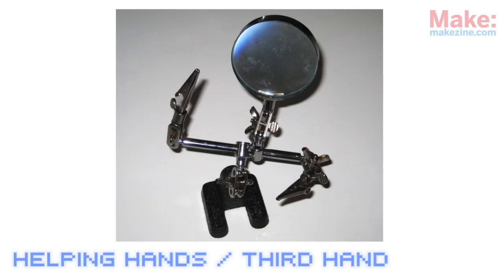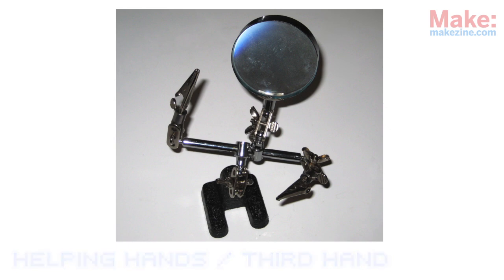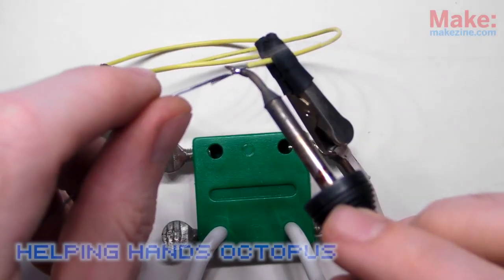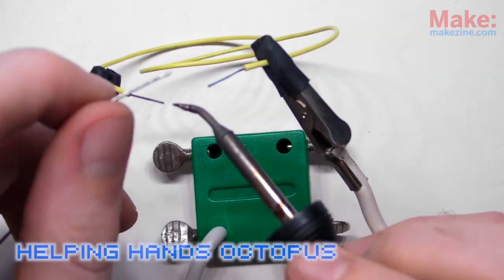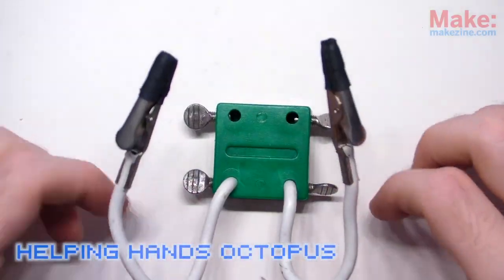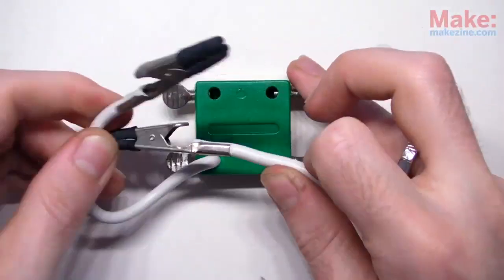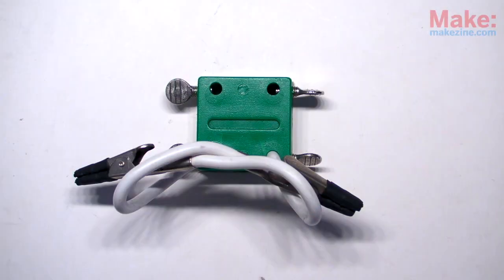Helping hands tools are okay for holding small PCBs, but I've found they're just too flimsy for regular use. Though I do still keep this little guy around for tinning wire. He's also got personality, and that goes a long way. I'll take that as a compliment.